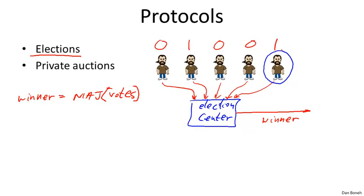This is an example of a protocol involving six parties — five voters and one election center — that compute amongst themselves so that at the end of the computation, the result of the election is known but nothing else is revealed about the individual inputs. A similar problem arises in the context of private auctions.